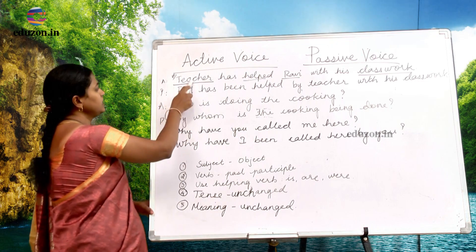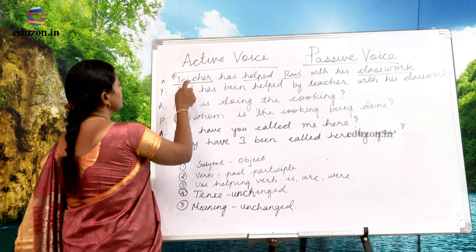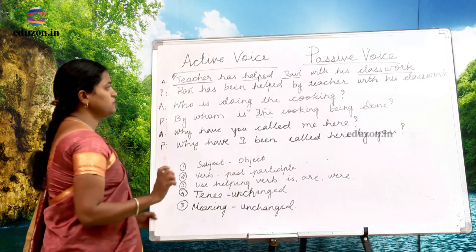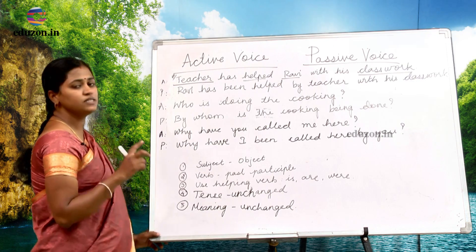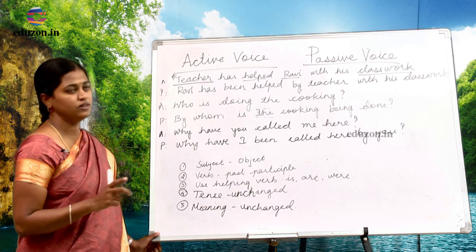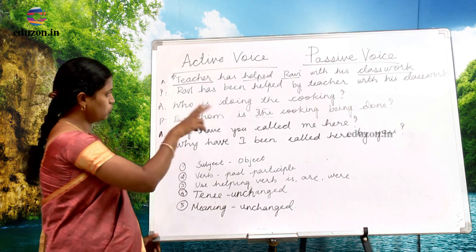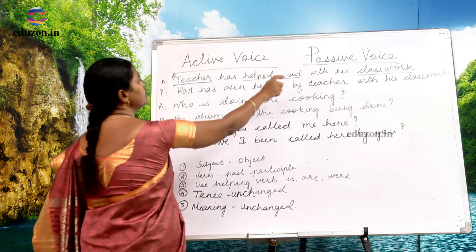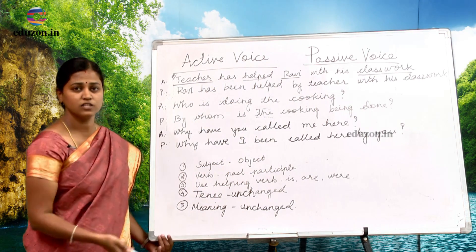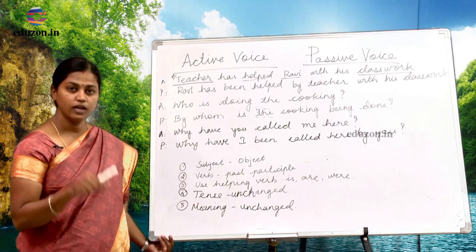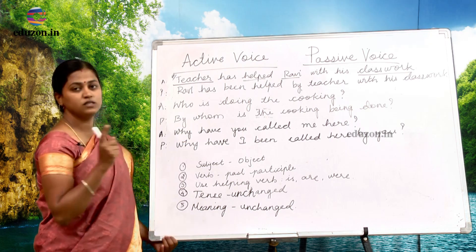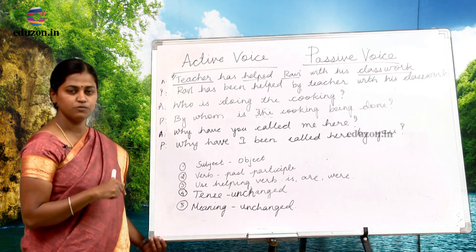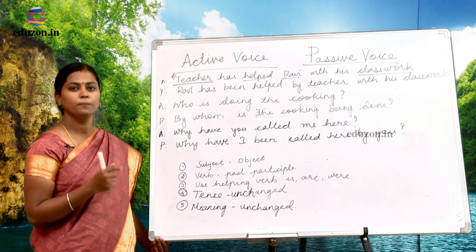When there are two objects like Ravi and class work, you should be clear about which is the actual object of the sentence. Teacher has helped Ravi — teacher has not helped the class work. So we must be clear about what is the object in active voice to use it as the subject in passive voice.